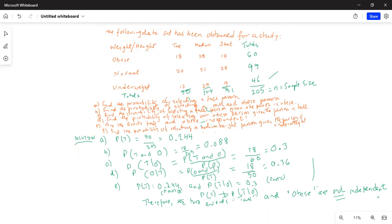And part F: find the probability of selecting a medium height person given the person is underweight. Medium height given the person is underweight. So underweight happened first. The total of underweight row is 46, out of which how many are medium? Medium are 25. So it's 25 out of 46. So again, underweight happened first. Total of underweight is 46, out of which how many are medium is 25. So it's 25 divided by 46, and that is equal to 0.543.